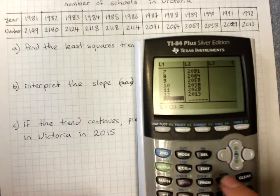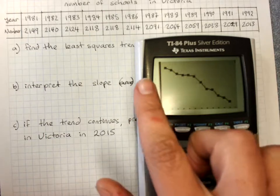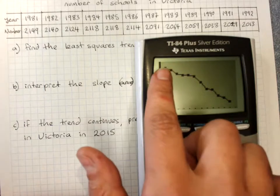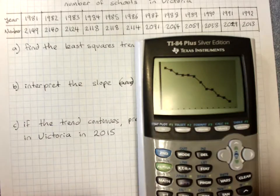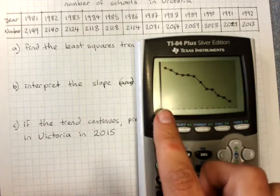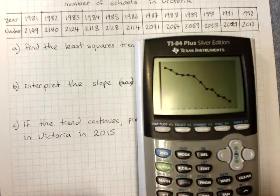And it can be a good idea to have a quick look at your graph. Zoom 9. Now I've got this a nice obvious fairly linear negative association between the year and the number of schools. So because it looks pretty linear, we can use a least squares line.